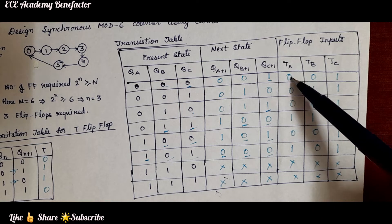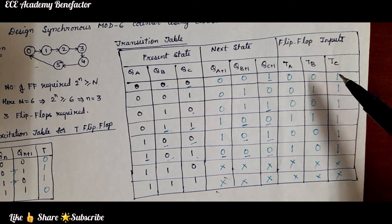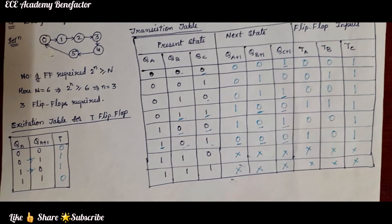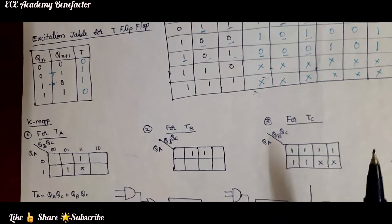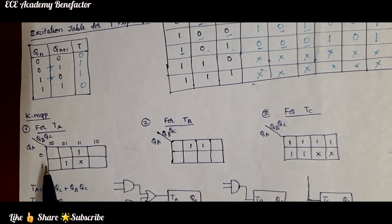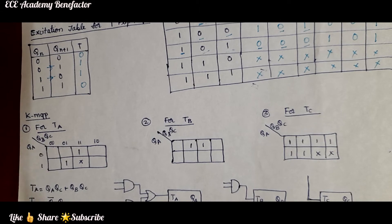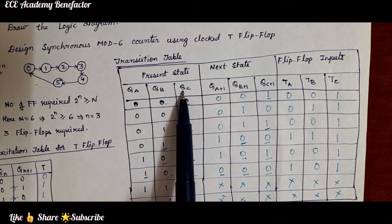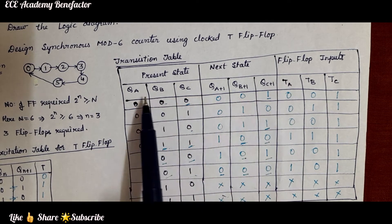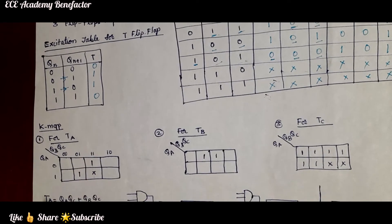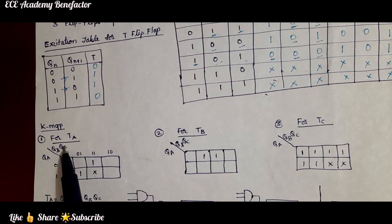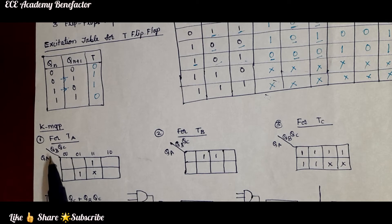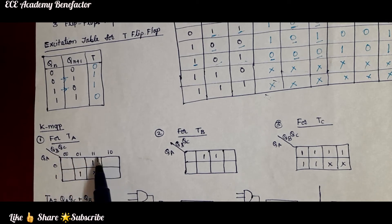We need to draw three K-maps — one for TA, one for TB, and one for TC. For TA, the 3-variable K-map is drawn with inputs QA, QB, QC, giving 8 cells numbered 0 through 7. Looking at the TA column, TA has 1s at positions 3 and 5, with don't cares at cells 6 and 7.